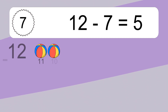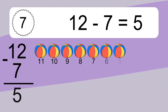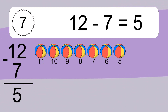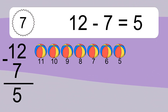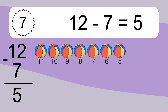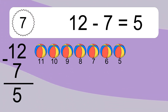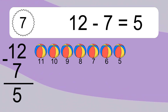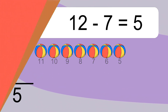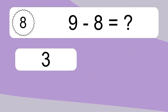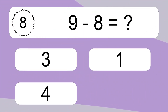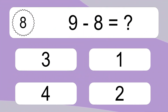12 minus 7 equals what? 12 minus 7 equals 5. Let's count it: 11, 10, 9, 8, 7, 6, 5.